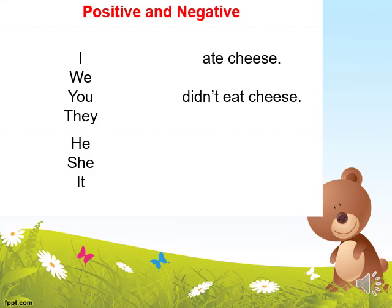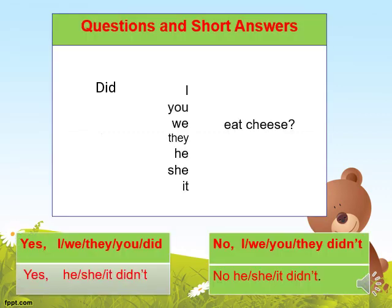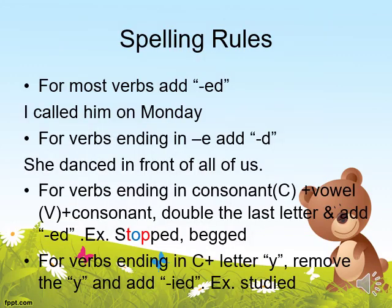For interrogative and negative forms we use did or didn't. For questions we use did — for example: did I eat? Pay attention: whenever you have did or didn't, use the infinitive or base form of the verb. Did I eat? Did you eat? For short answers: yes I did, yes we did, yes he did, or no he didn't.